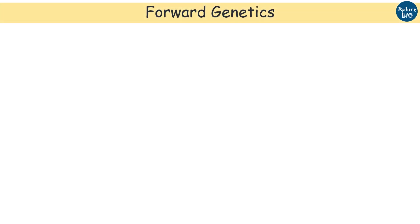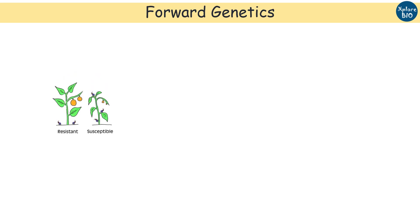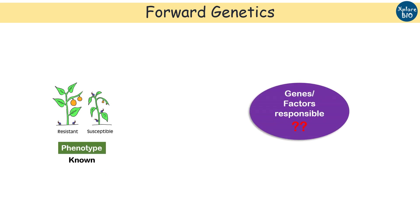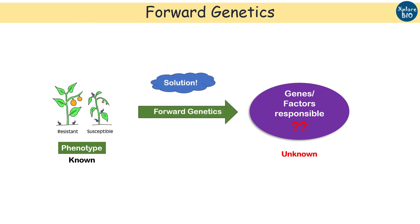Let's take an example to understand this better. Suppose you want to study disease resistance in a particular plant. You can observe the disease phenotype in a resistant plant, so you know the phenotype but you do not know what genes or factors are responsible for this resistance. Therefore, you have to choose a suitable forward genetics approach.